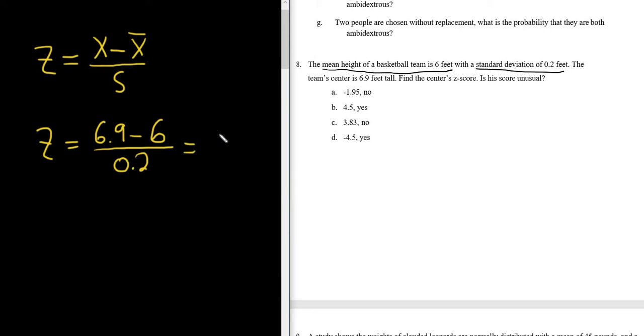So this is going to be 0.9 over 0.2. Let's see what this is, 0.9 divided by 0.2, I got 4.5, wow, okay.